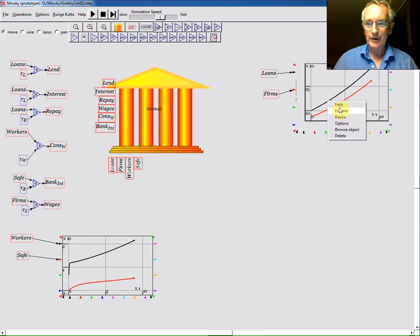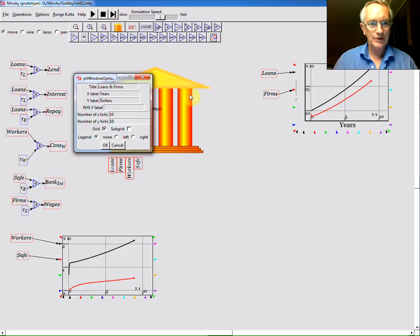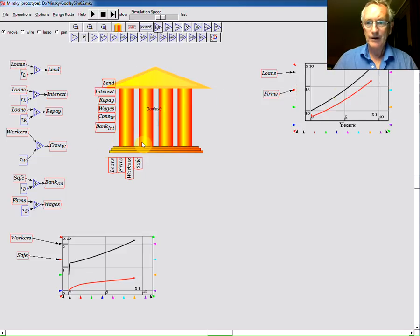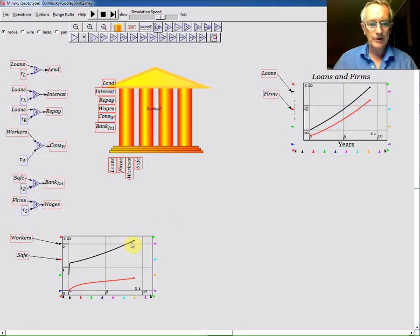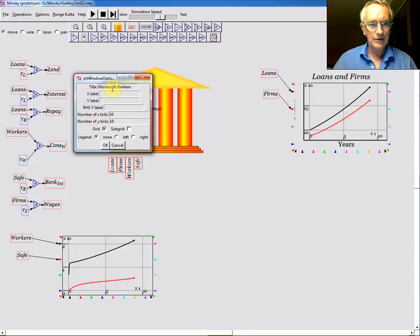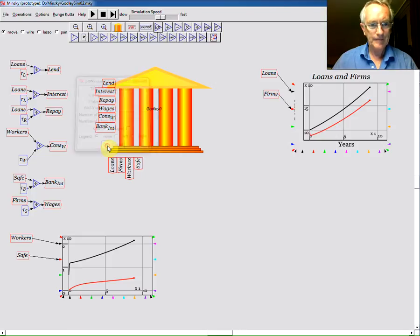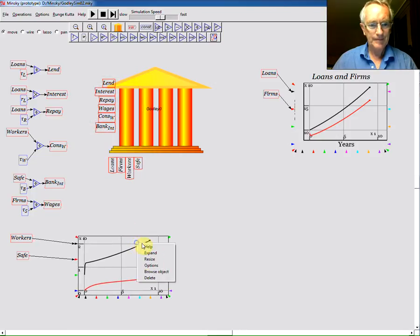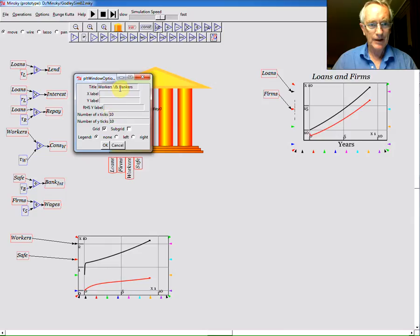So some things don't work all that well, and this is just because we're still in the stage of working with new software. It can often be things like putting in characters that confuse the system. The ampersand is what's doing it there, so I'll just make that 'and'.